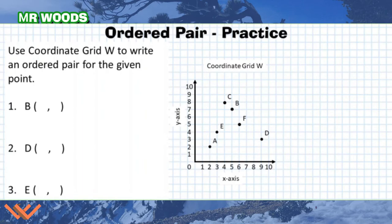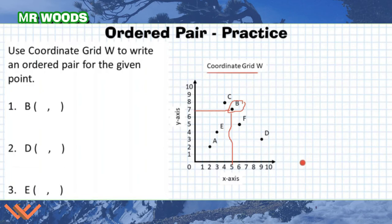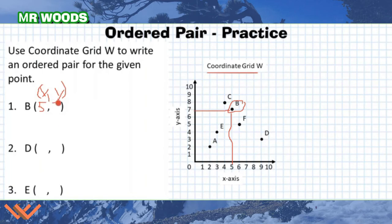Let's do some practice. It reads: use coordinate grid W to write an ordered pair for the given point. Here's coordinate grid W, and you see all these points — A, E, C, B, F, and D. We have to find the coordinate for point B. I'm going to draw a line down and across so we have a better idea of where to count. Remember x first, y second. Counting the x-axis: 1, 2, 3, 4, 5. Then going up the y-axis: 1, 2, 3, 4, 5, 6, 7. So point B is located at (5, 7) — x equals 5 and y equals 7.